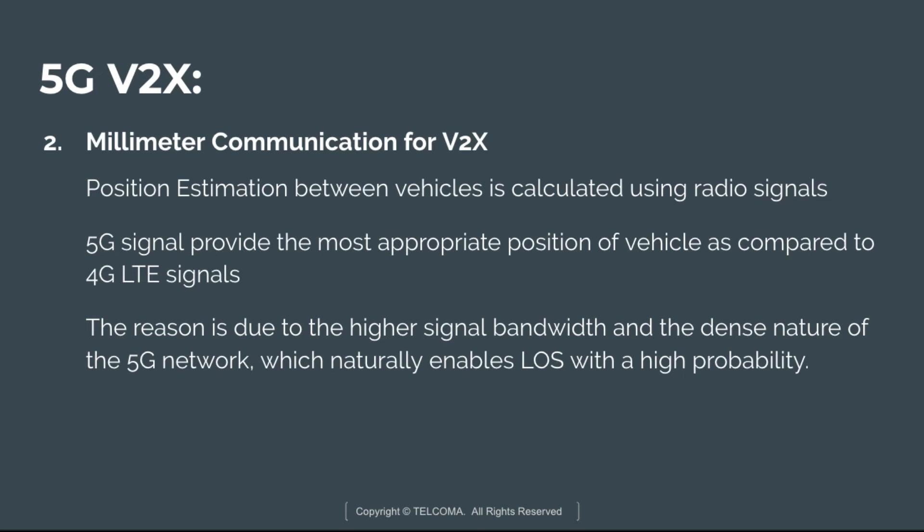Position estimation between vehicles is also calculated using radio signals. Millimeter wave communication and 5G signals will provide the most accurate position of vehicles compared to 4G LTE signals, due to the higher signal bandwidth and the dense nature of the 5G network, which naturally enables line-of-sight with high probability.